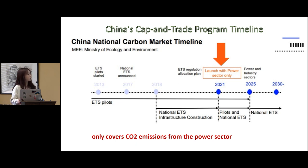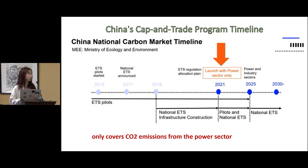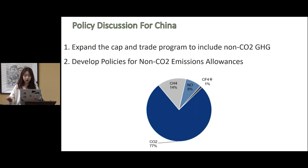This is China's cap and trade program timeline. In 2013, ETS pilots started in several regions like Shanghai and Shenzhen. In 2017, the national ETS was announced, and in 2018, the national ETS infrastructure construction was completed. It was not until 2021 that the national ETS officially launched, but this national ETS program only covers carbon dioxide emissions from the power sector alone. The inclusion of non-CO2 greenhouse gases in the cap and trade program has the potential to significantly increase the program's overall effectiveness in reducing total greenhouse gas emissions.